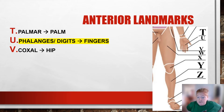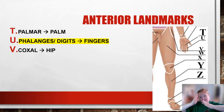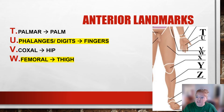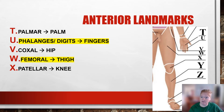Coxal is your hips — you can see very clearly that's on the side. Remember we had pelvic, inguinal, pubic along the front, and then on the side we have coxal. Femoral, like your femur, is your thigh. Patellar is the anterior or front of the knee — your kneecap — which you can move around.